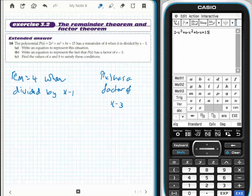This is for Year 11 Methods, exercise 3.2, question 16. The polynomial P(X) has A and B inside it. It has a remainder of 4 when divided by X minus 1. Write an equation to represent this situation.